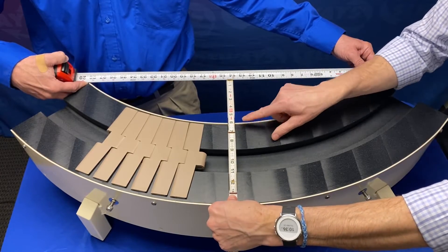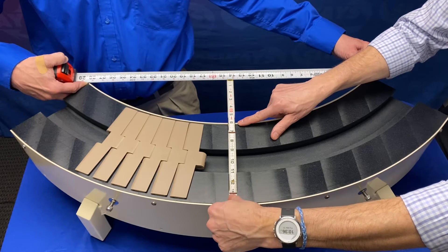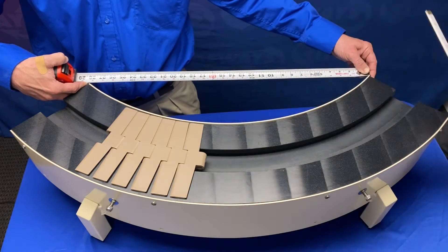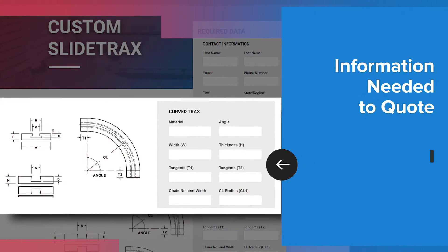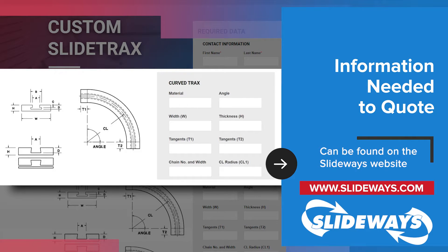It's best to engage maintenance personnel on this project so they understand the importance and challenges of getting accurate measurements. The dimensions needed to quote slide tracks plastic chain tracks can be found on the Slideways website at slideways.com.